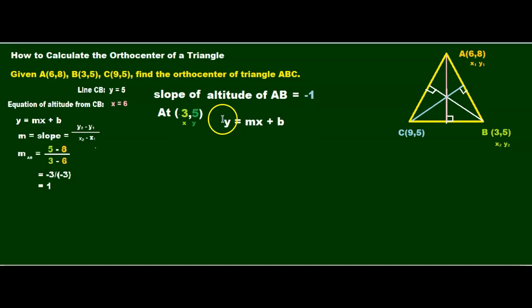At (3,5), we're going to go back to Y equals MX plus B. I've color-coded stuff. So, my Y is 5 equals our M is now negative 1. Our X is now 3, and we need to find our B. Simplify, 5 equals negative 1 times 3 is negative 3 plus B. We're going to add 3 on both sides.